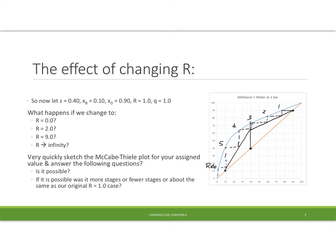Today we want to look and see what happens when we change the reflux ratio. You'll recall that reflux ratio figures into how we calculate the slope of the enriching section operating line. The slope is L over V by definition, but in terms of reflux ratio it's R over R plus 1. So we're going to be looking at some various values — I'd like for you all to divide up and look at different values: 0, 2, 9, and infinity.